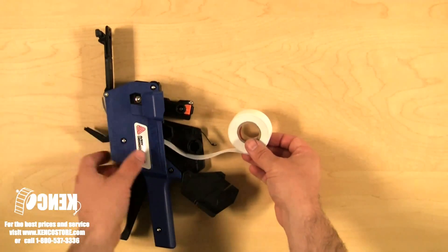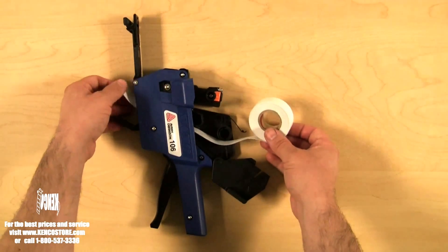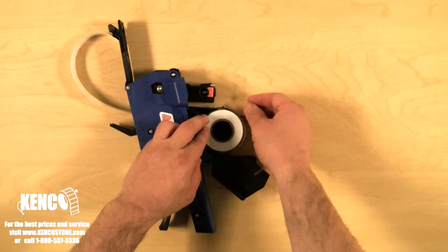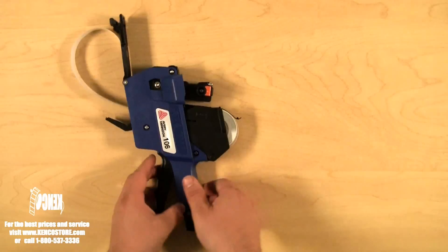And feed it until it comes out on the other side. We're going to place it on this spindle and place the guide on top of it. We're going to close the label holder door.